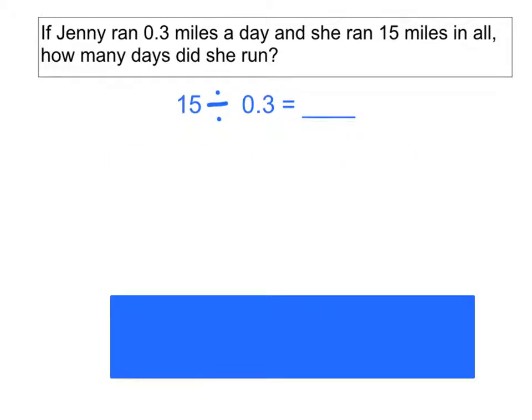Let's look at a word problem here. If Jenny ran 0.3 miles a day and she ran 15 miles in all, how many days did she run? So here we have an equation, and the equation matches the story problem. We have 15, the total number of miles that Jenny ran, and we're dividing that by 0.3, which is how many miles she ran a day. Now, we're trying to figure out the blank, which is the total number of days that she ran.